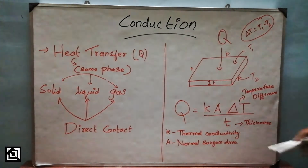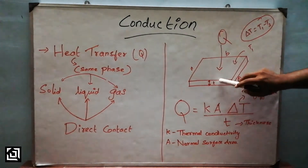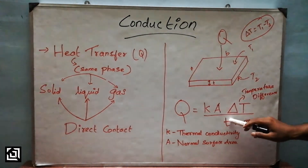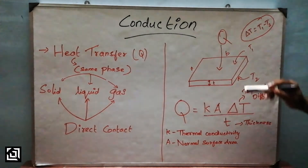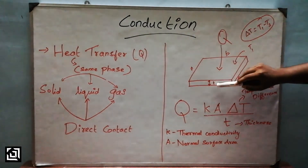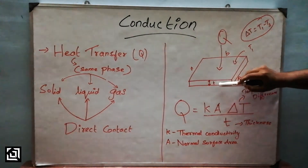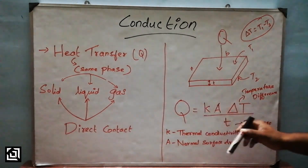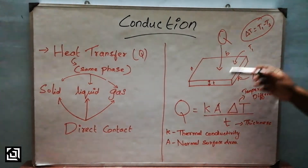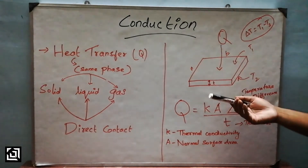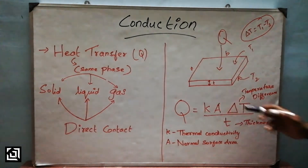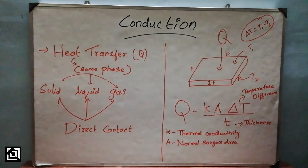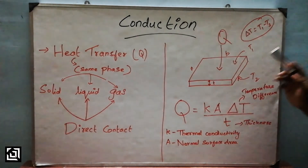The fourth factor is thickness — the slab thickness. Thickness is inversely proportional to heat transfer. If the thickness increases, heat transfer decreases; if the thickness is low, heat transfer is higher. So in summary, the four factors affecting conduction are thermal conductivity, area, temperature difference, and thickness. That is conduction.